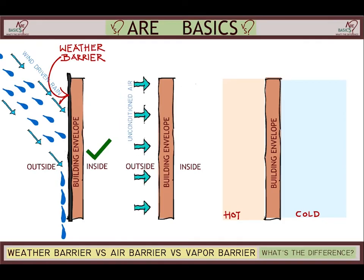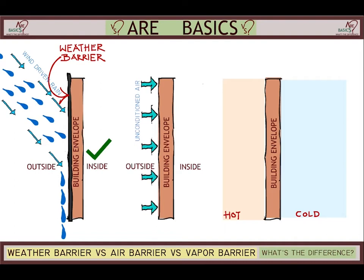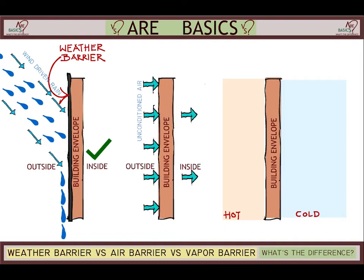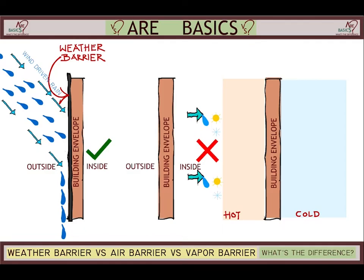Outside air has a tendency to drift in through the seams of a building envelope. That unconditioned air brings moisture and exterior heat or cold inside the space, which is not desirable as it hampers the energy efficiency of the building and deteriorates its performance.